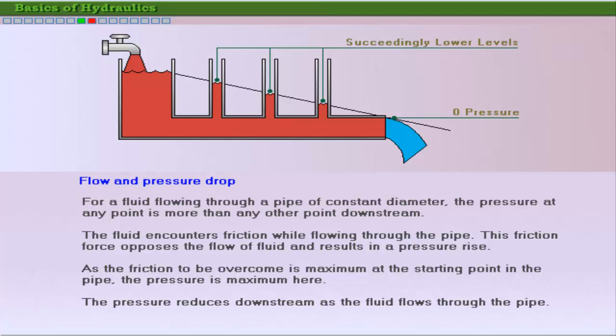When a fluid flows through a constant diameter pipe, the pressure at any point downstream is always lower than any other point upstream. This is so because there is pressure drop as the fluid overcomes the friction in the pipe in order to flow. This is similar to the example of different resistances arranged in series in a circuit.